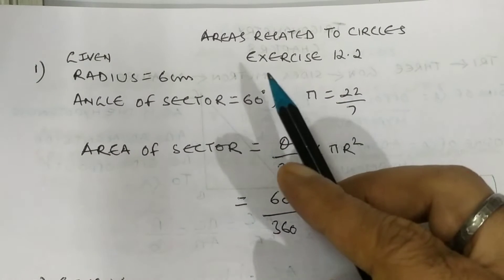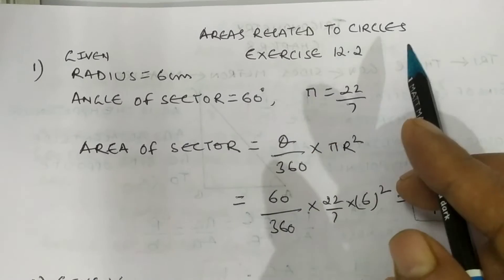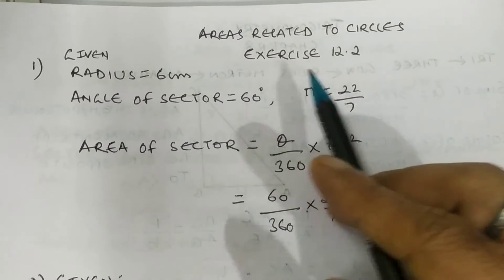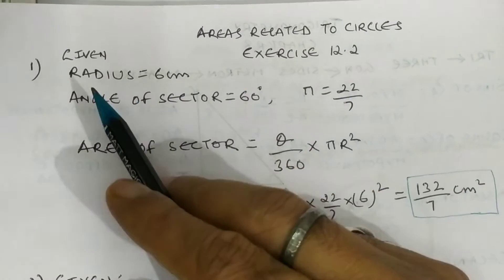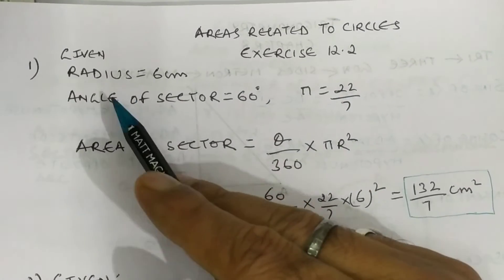Chapter 12: Area related to circles. Exercise 12.2, Question number 1.